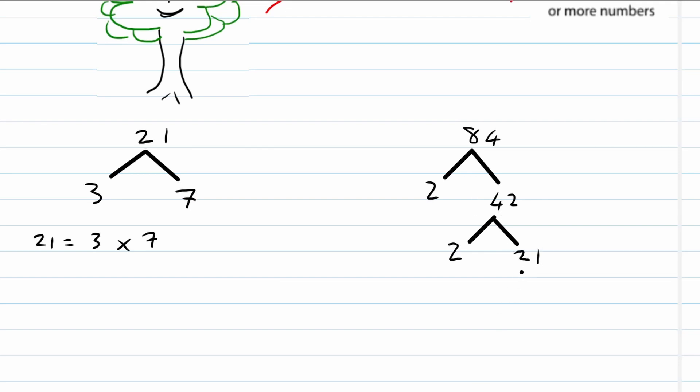Can 21 be divided by 2? No. But it can be divided by 3. The answer then becomes 7. So 84 can be written down as follows.